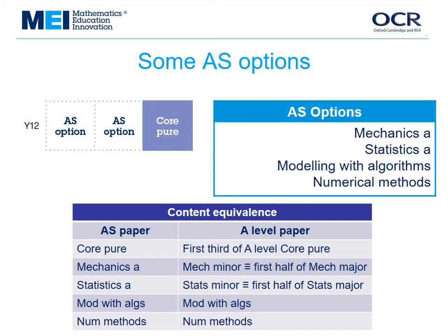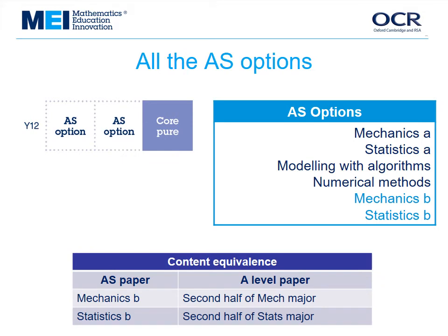However, AS exam papers are all set at AS standard and A-Level exam papers, even on the same content, are all set at A-Level standard. There are also two other AS optional papers — Mechanics B and Statistics B — which are equivalent to the second half of the major options in the A-Level. These don't really work in Year 12, but some schools and colleges offer AS Further Maths in Year 13, and these options give students the chance to study the maths they need for their university course rather than just what can be taught in Year 12. These papers are set at the same AS standard as the other AS papers.